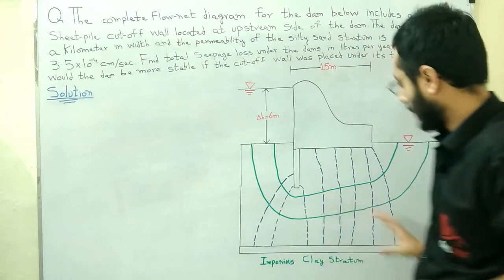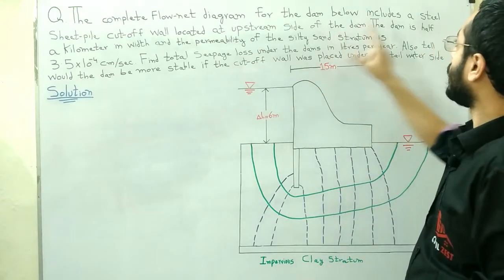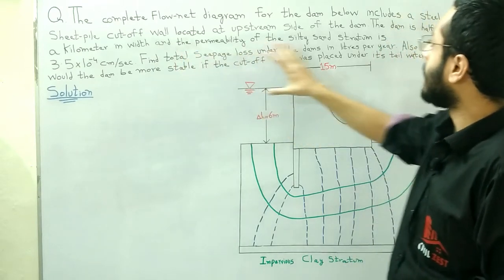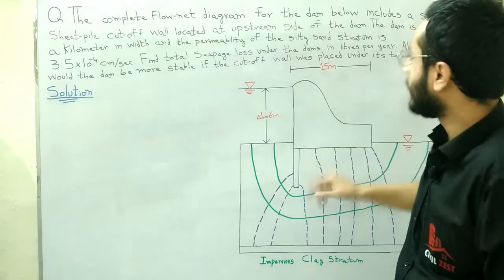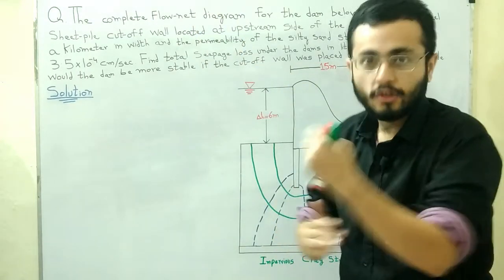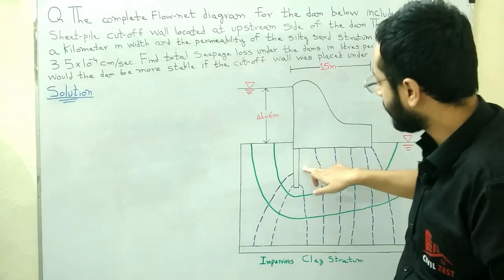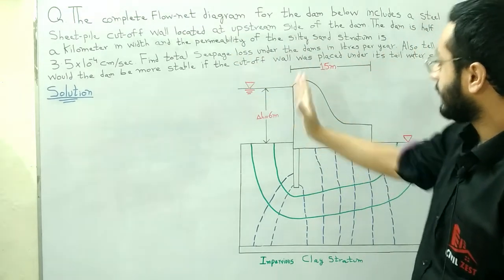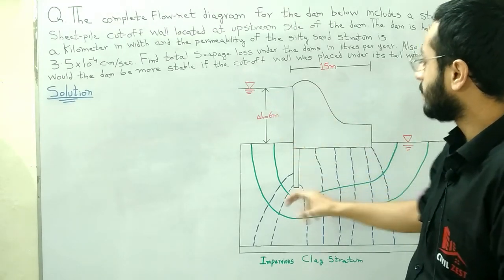Here is the statement of the numerical with its diagram. The complete flow net diagram for the dam includes a steel sheet pile cutoff wall located at the upstream side of the dam. The steel sheet pile cutoff provides stability to the dam and is located on the upstream side, while the other side is the downstream side.